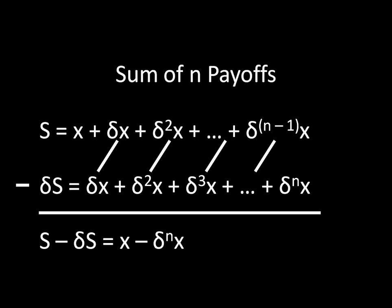So suddenly, instead of dealing with n number of terms, we're left with something that looks rather simple. Obviously, we're not done, though. What we really care about is figuring out what S equals. Remember that S is the sum of the stream of n payoffs that we cared about originally. So let's work to solve for that S.